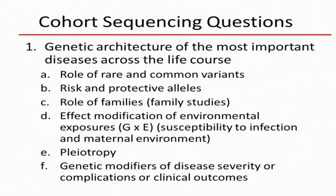The first category was a series of questions related to genetic architecture. Some of them are obvious, but that doesn't mean they're not important. We had a couple of people that suggested we talk more about the role of families, and I've added that to this category — as we think about how to tease apart the genetic architecture of human disease, we should consider the role of families.